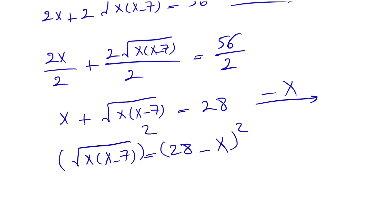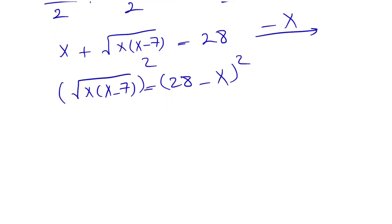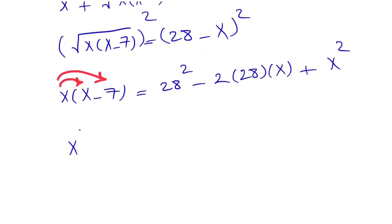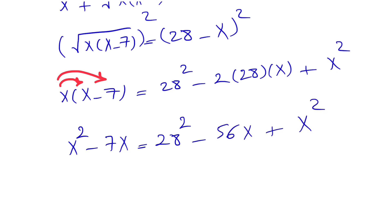Now if we square each side, we can get rid of the square root on the left side, and there is no square root on the right side, so we're good to go. What we get on the left side is x times (x minus 7). On the right side, we have 28 squared minus 2 times 28 times x plus x squared. Expanding the left side: x squared minus 7x. On the right: 28 squared minus 56x plus x squared.